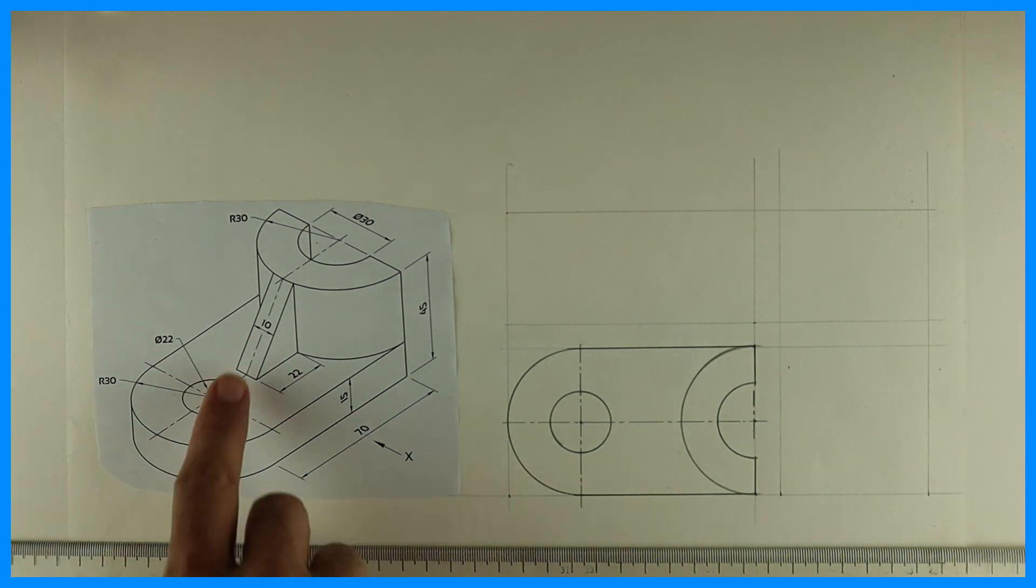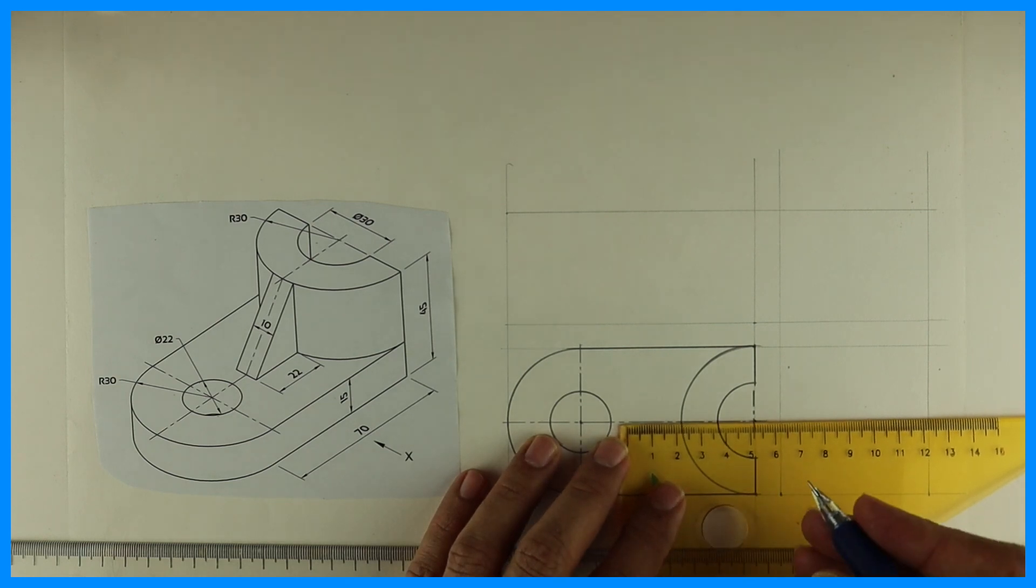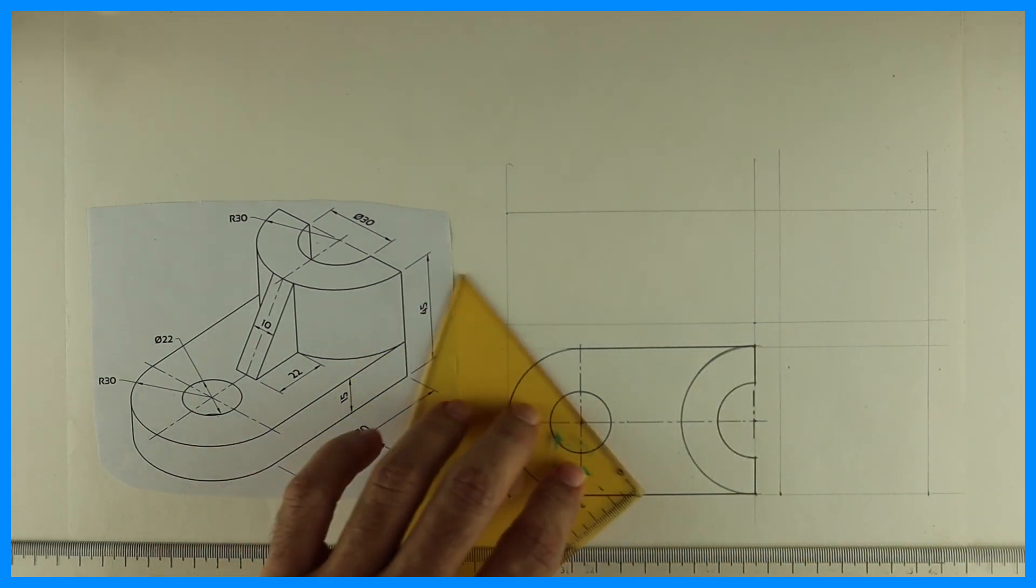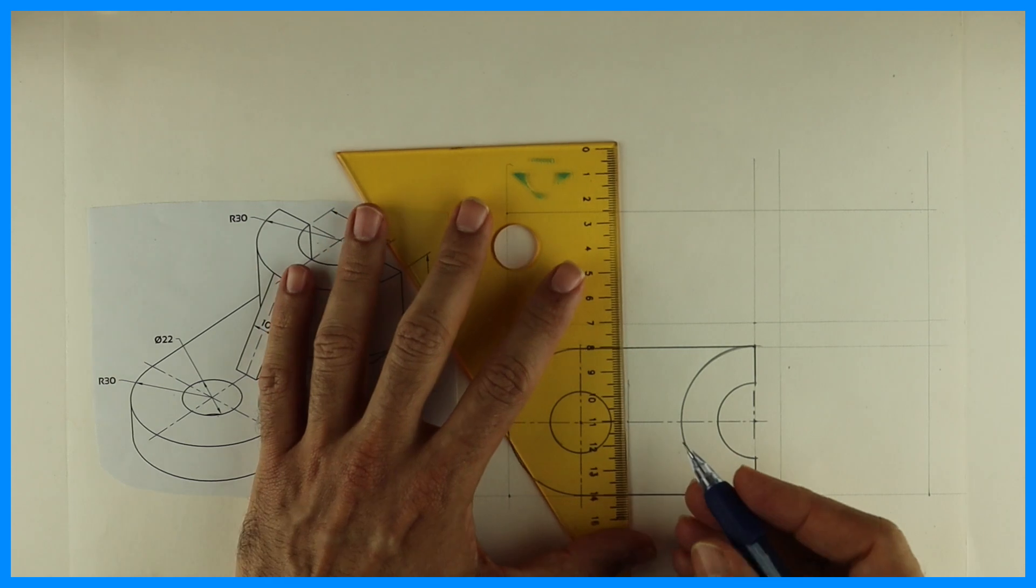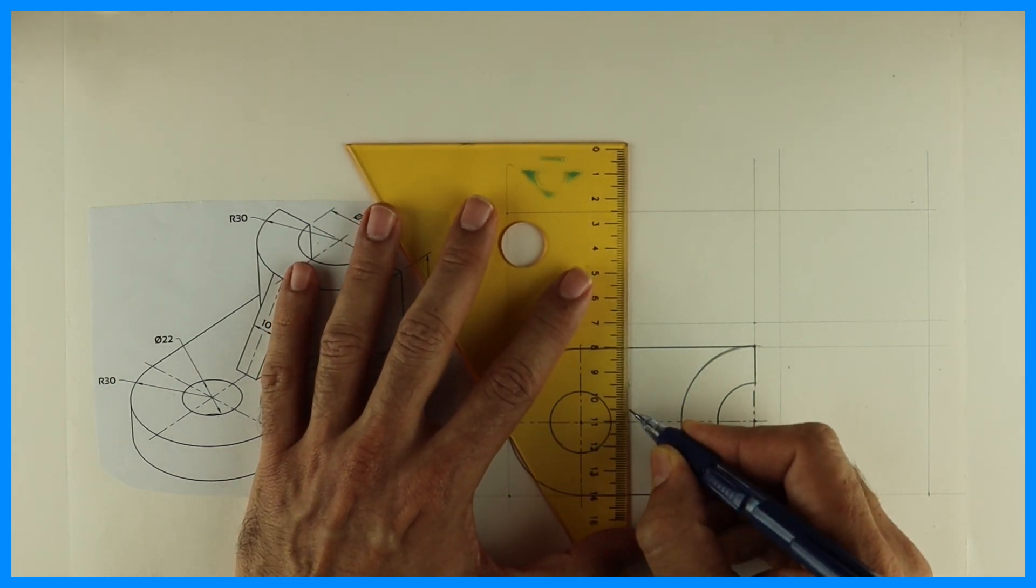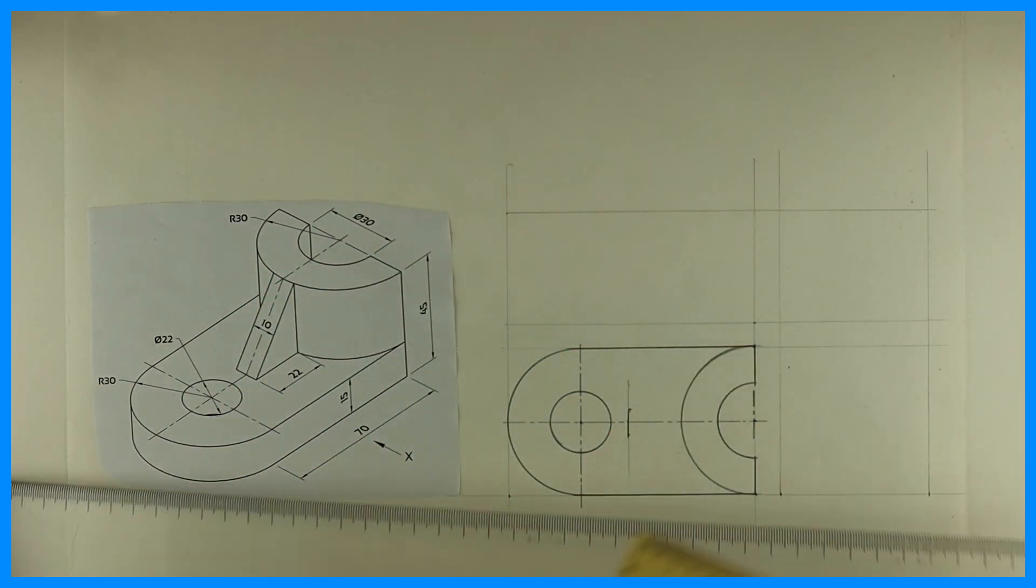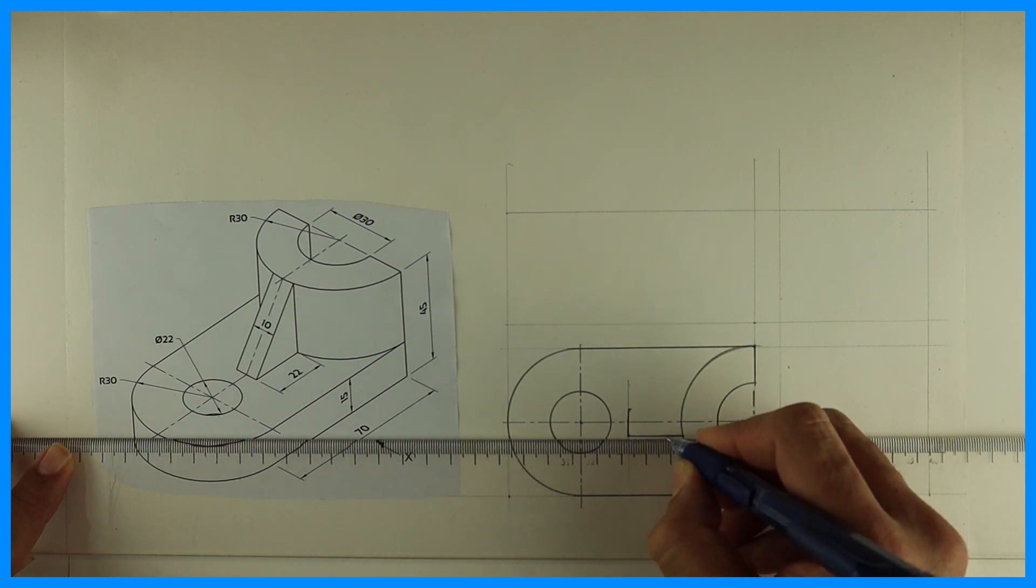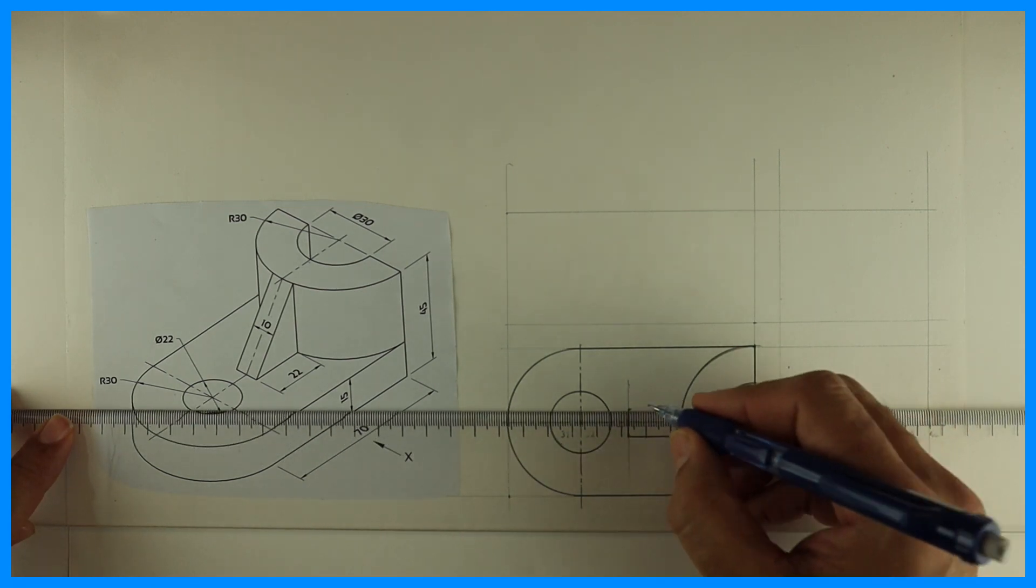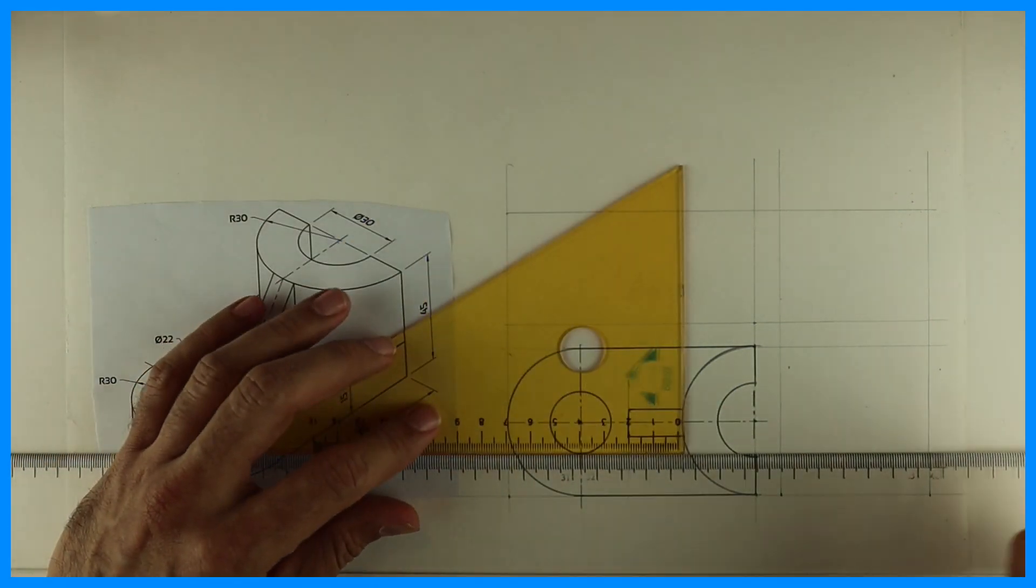Then you take 50. Then you take 15 on both the sides and you draw this rib, inclined portion, right? It will appear as a rectangle.